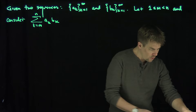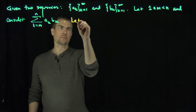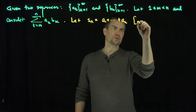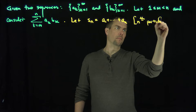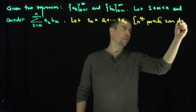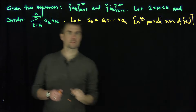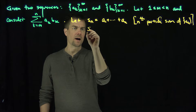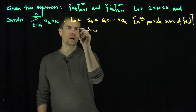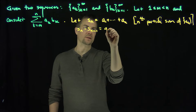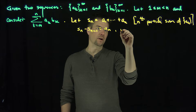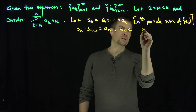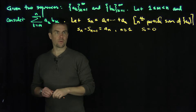We do that in the following way. We let S_n be a_1 plus all the way up to a_n — the nth partial sum of the sequence a_n. We can notice that for any n ≥ 1, S_n minus S_{n-1} equals a_n, provided we define S_0 to be 0.